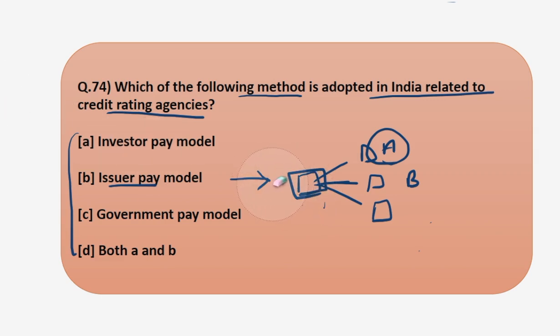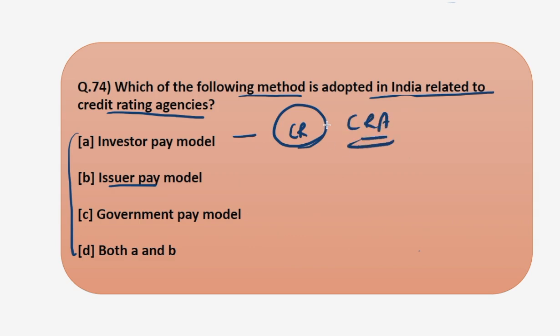The next model is investor pay model. Here the investors pay for the credit rating from the credit rating agencies. The problem in issuer pay model, which was rating shopping, is overcome. However, there is a new problem known as free riding, which decreases the revenue of rating agencies because not all investors want credit ratings of different companies. It also means that ratings would be available only to those investors who can pay for them, taking the rating out of the public domain. In the issuer pay model, as the issuer pays for the credit rating, it is available in the public domain.